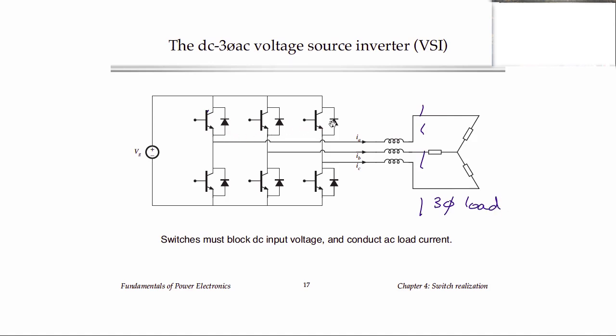So we vary each of these phases or vary their duty cycles sinusoidally in a three-phase manner. So there are 120 and 240 degrees shifted in phase to get a three-phase AC output. And with this we can, by varying all three phases in this way, generate a three-phase AC and drive an AC load.